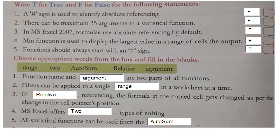Choose appropriate words from the box and fill in the blanks: range, two, AutoSum, relative, argument. Number one: function name and argument are two parts of the functions. Number two: filters can be applied to a single range in a worksheet at a time.